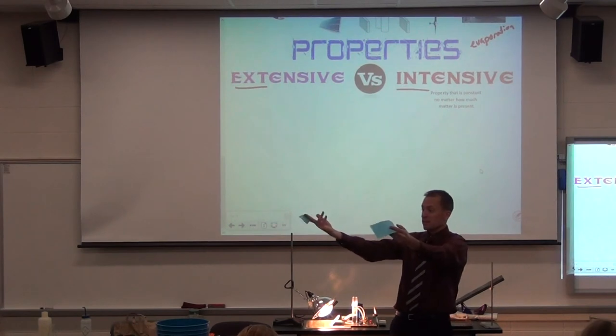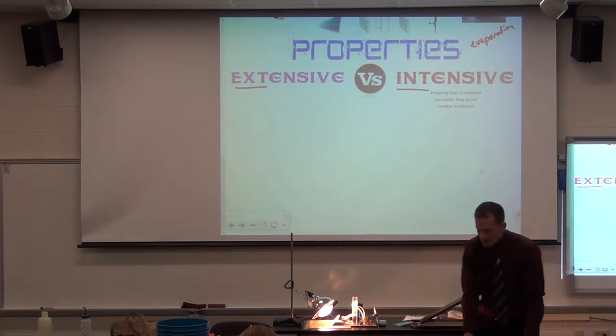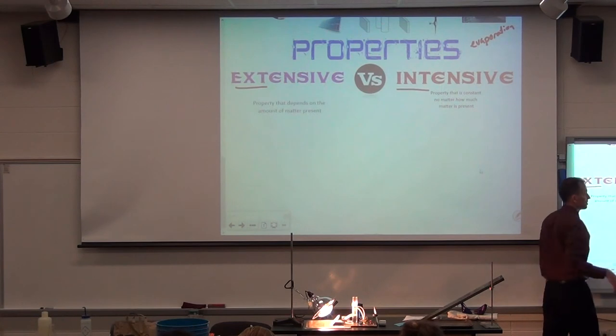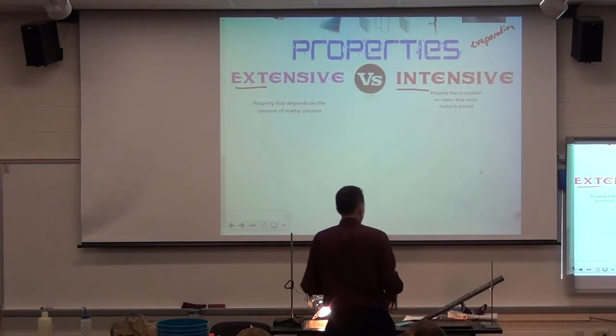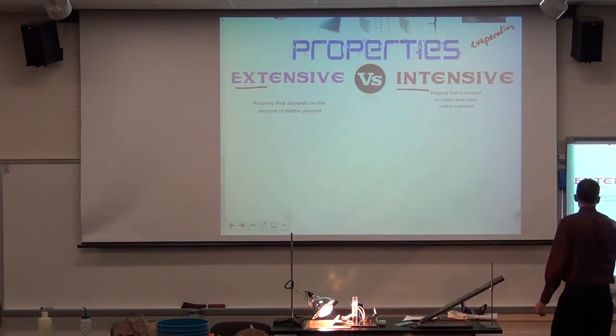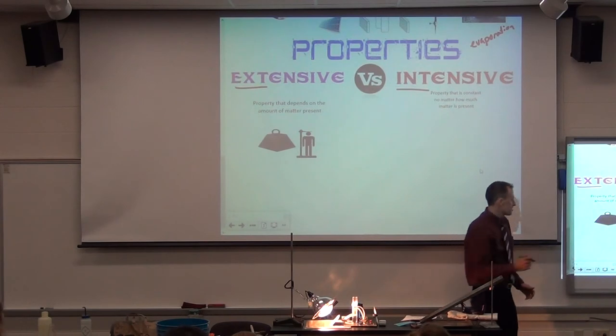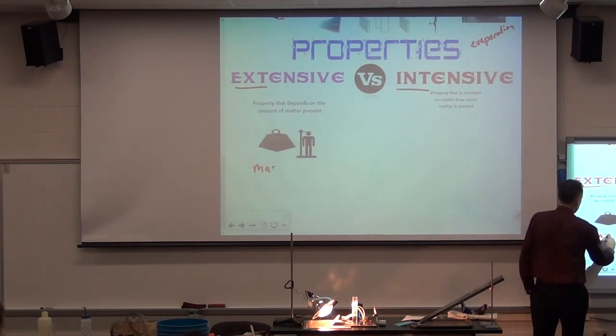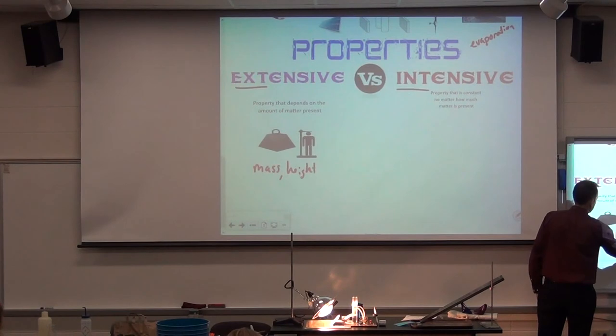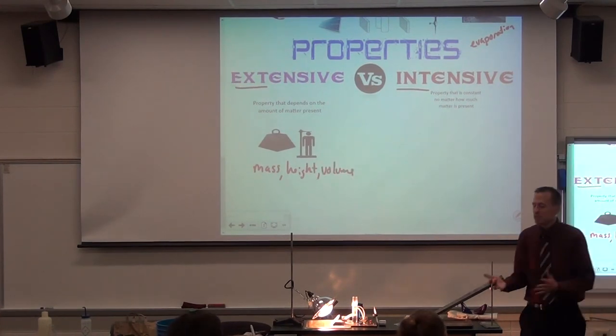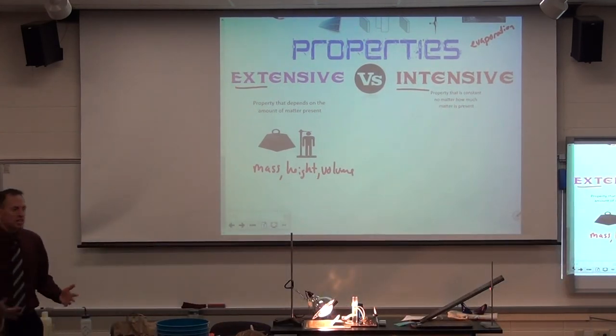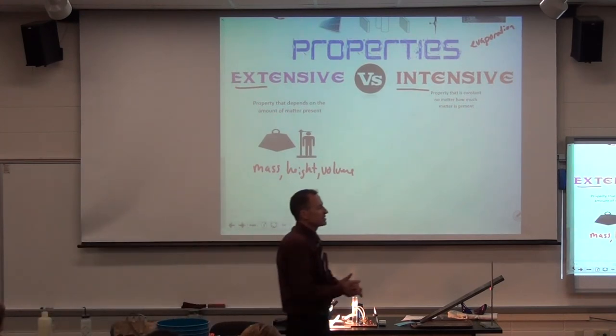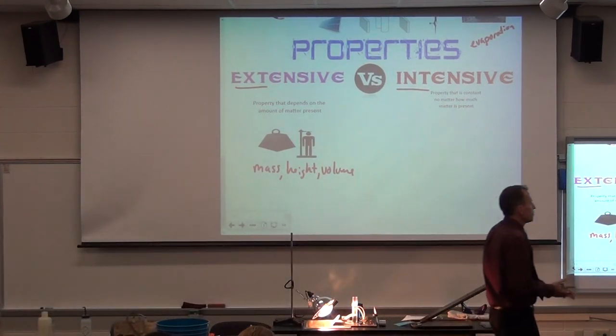So that is what we call an extensive property. Just the word mass is an extensive property. So I have a couple examples that we can write. And that's one of them. Mass. Height. Volume. These are all things. It doesn't work perfectly, but if you measure them, if you make a measurement a lot of times, it usually will change the classic measurements we make because they are extensive properties.